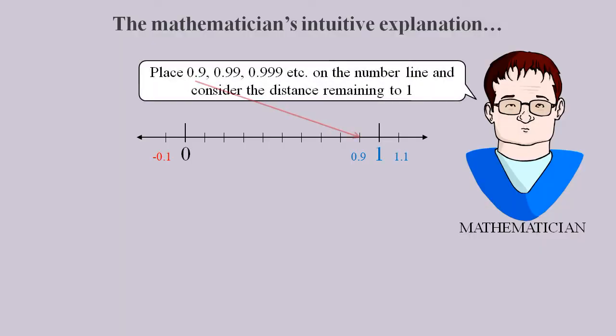First, place 0.9 on the number line. And notice that the distance between that point and 1 is one-tenth. Next, place 0.99 on the number line. And notice that the distance between that point and 1 is one-hundredth. Put 0.999 on the number line. And the distance to 1 is one-thousandth. Generalizing, the distance from the nth term to 1 will be 1 over 10 to the power n.